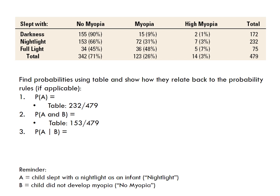Question 3 asks about P(A given B) — the probability of sleeping with a nightlight given that they did not develop myopia. We are conditioning on B, so our total is out of the 342 children who did not develop myopia. Of those 342, 153 slept with a nightlight, so P(A|B) = 153/342. For question 4, reversing the conditioning, we condition on A — the child having slept with a nightlight — so the total is 232. Of those, 153 did not develop myopia, so P(B|A) = 153/232.